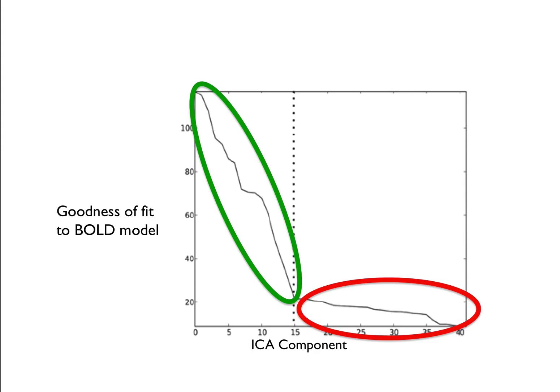You can do a couple of things with this: you can just keep the good components, or you can use the signal from the bad components as regressors to regress out the noise from the time series. If we want to do further analysis on our time series, we can regress out the noise by taking the time series from each bad ICA component and regressing it out.